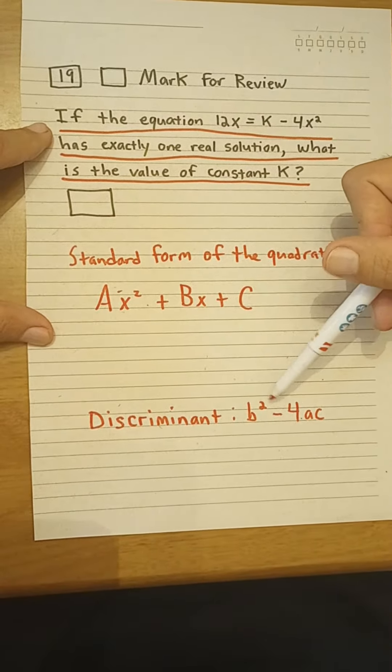And again, the discriminant is b squared minus 4ac. It's what you see under the square root sign in the quadratic formula.